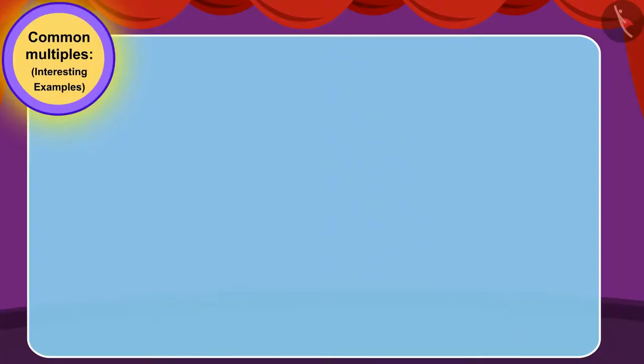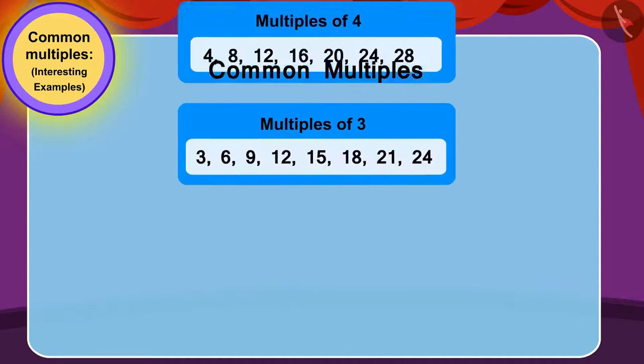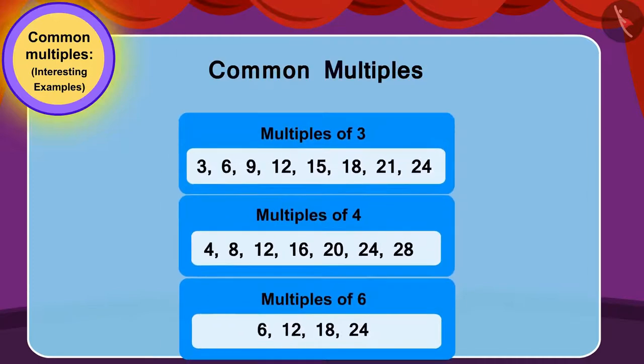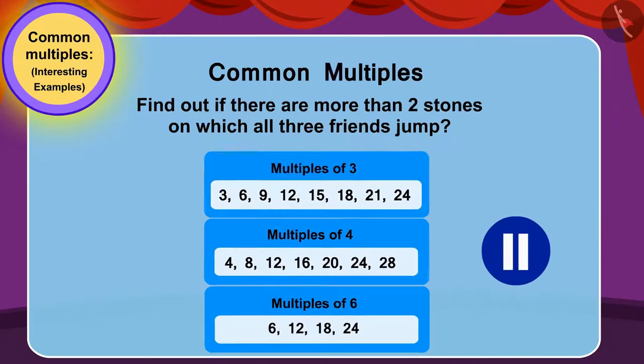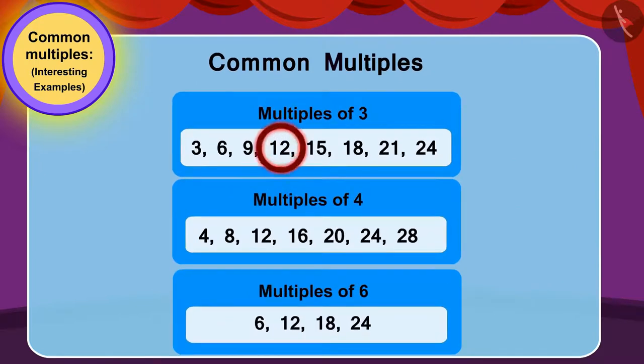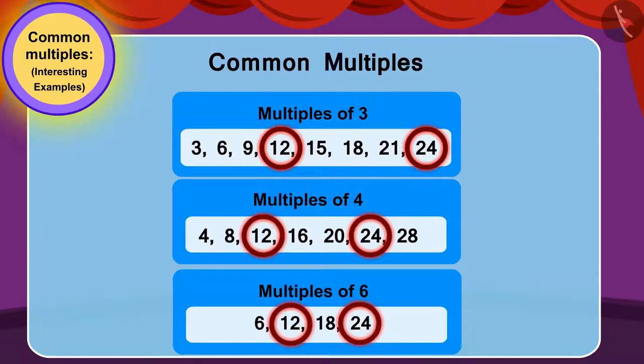Now, can you find common multiples of these three numbers and find out if there are more than two stones on which all three friends jump? You can find the answer by pausing the video. Yes! 12 and 24. 3, 4 and 6 have these common multiples.